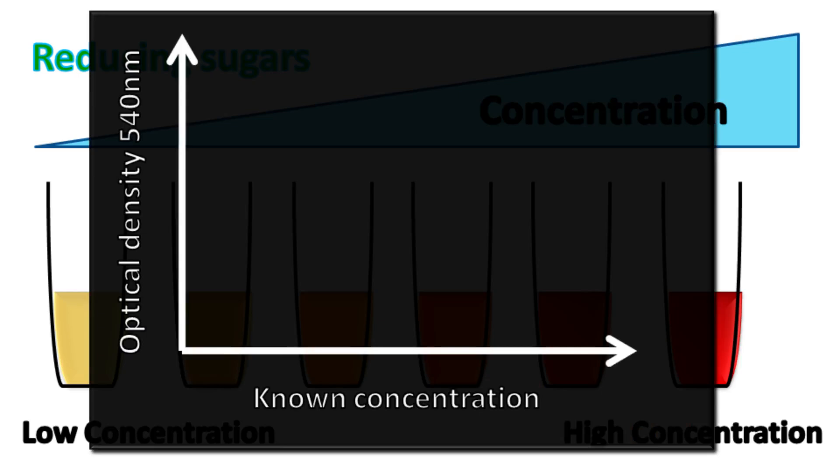By measuring the optical density of known concentrations of reducing sugar and plotting its optical density, a standard curve can be obtained. Based on the standard curve, the concentration of unknown reducing sugar can be estimated.